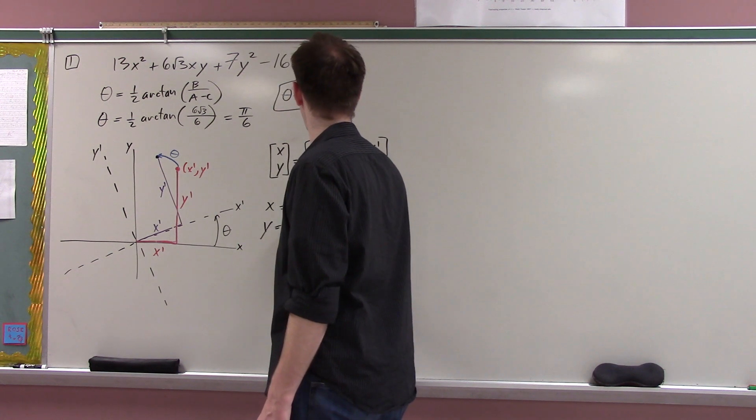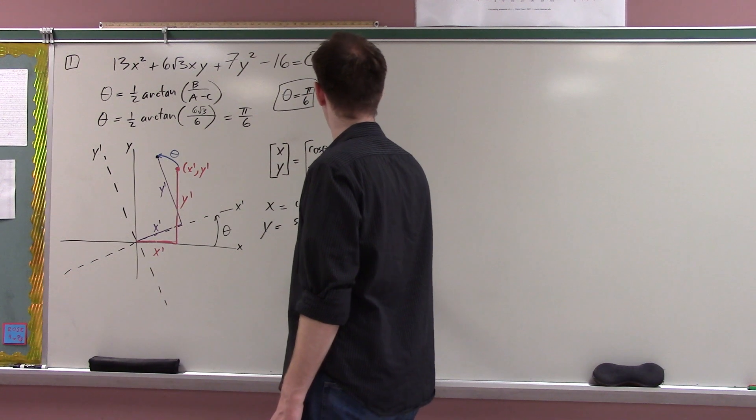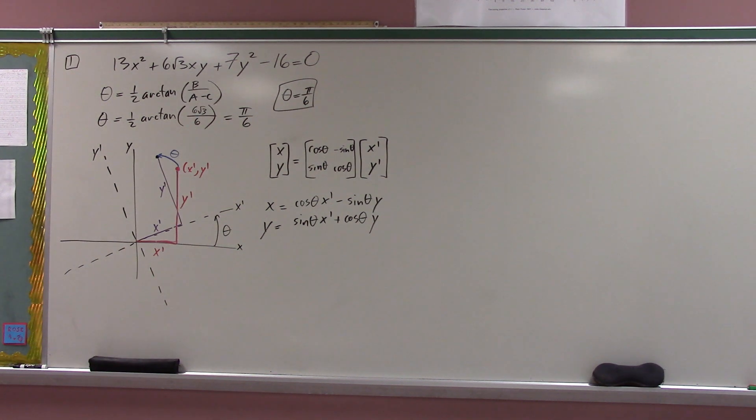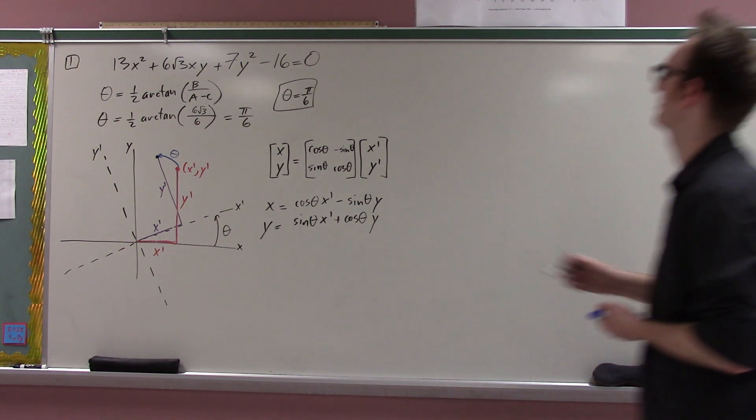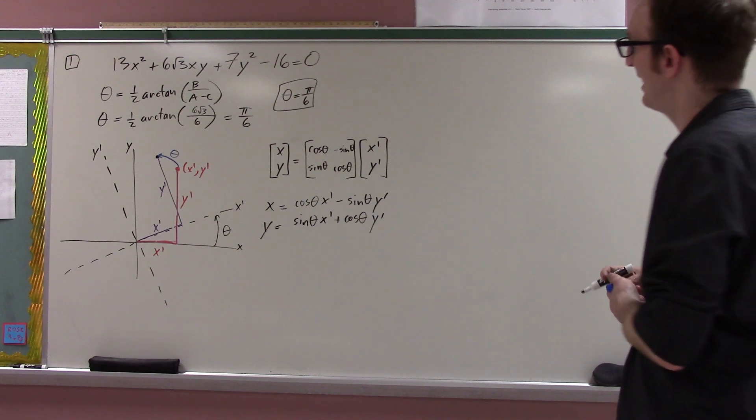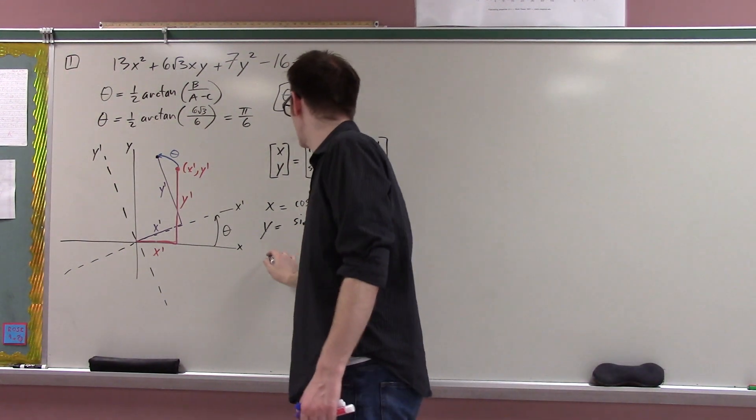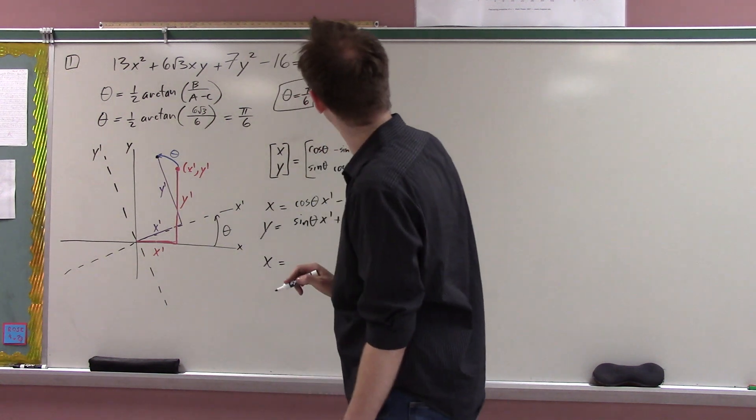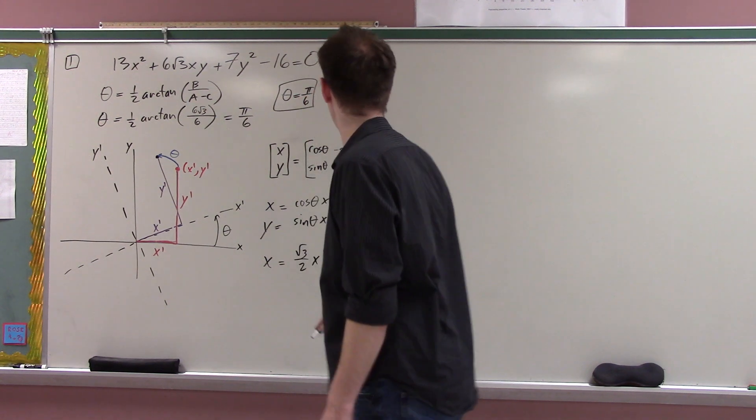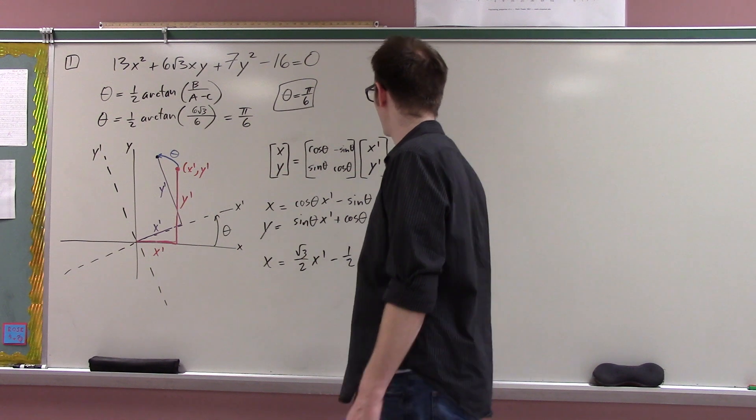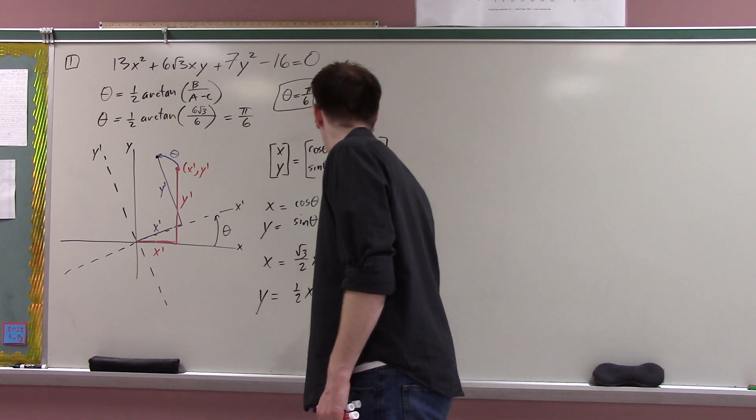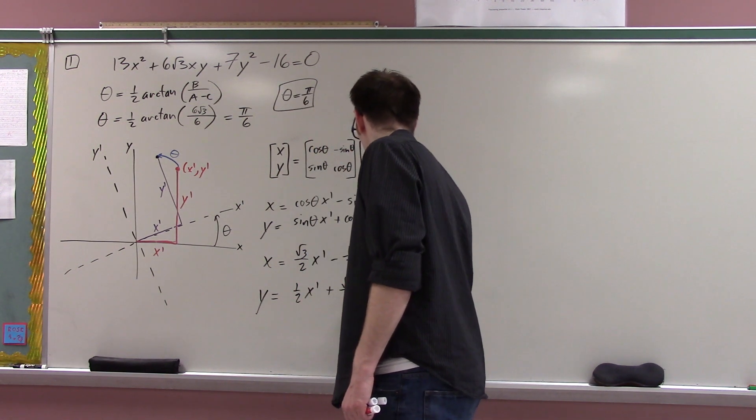This helps me to quickly re-derive the formulas for the relationship, or for x and y in terms of x prime and y prime. These should be primes. Okay, and for this particular problem, I can use the fact that theta is pi over 6. So actually, x is just root 3 over 2 x prime minus one-half y prime,